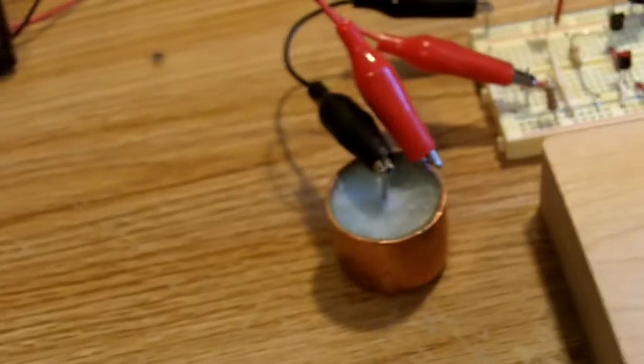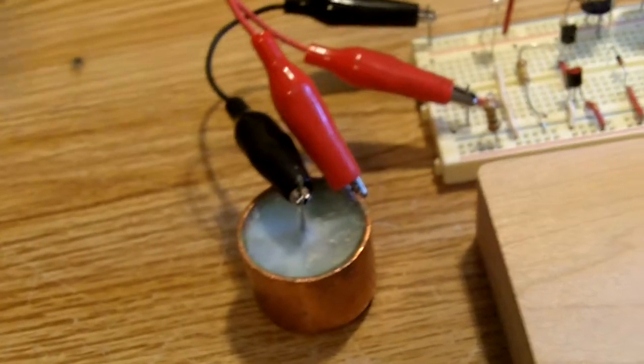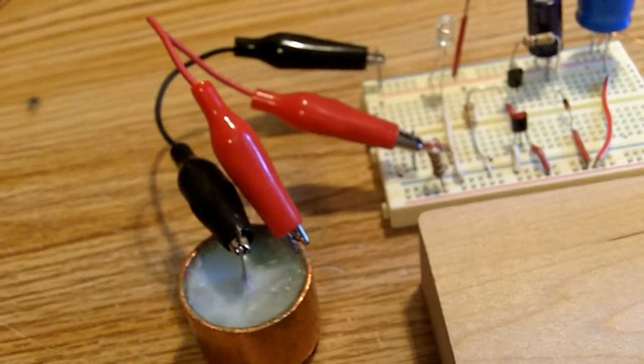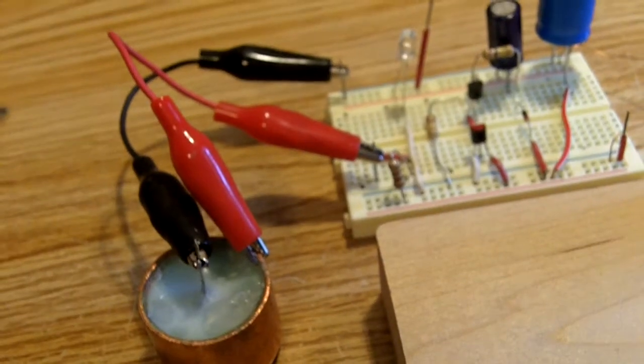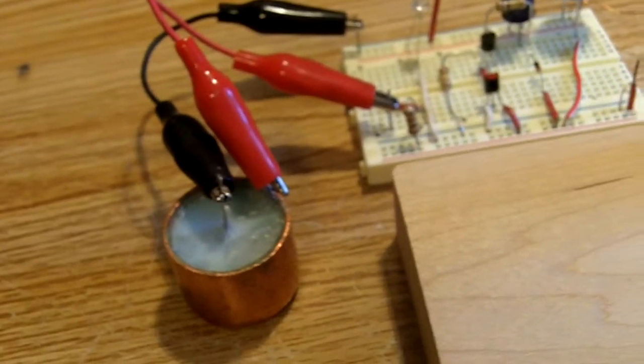And I'm running it with the bottle cap battery I put together. Nothing but Elmer's glue-all white glue, a little Epsom salt, and a little bit of salt substitute. I put it in there in layers.